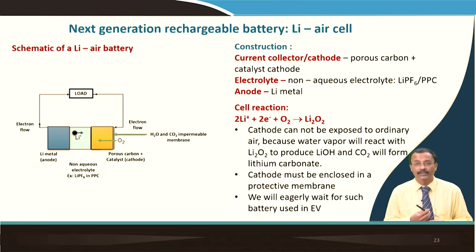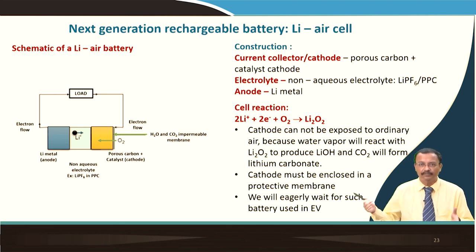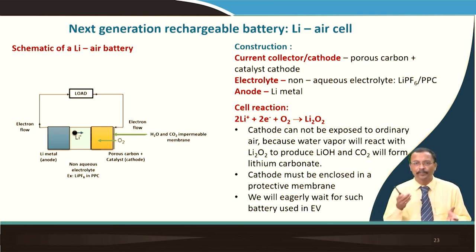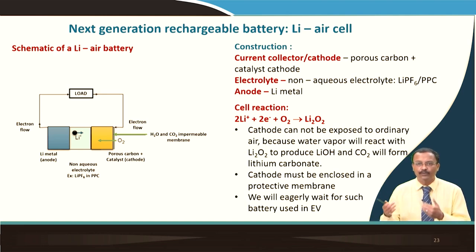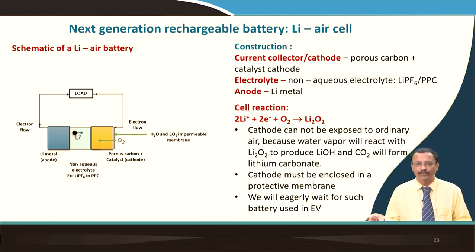Finally, we talk about the next-generation rechargeable battery: lithium-air. It is a very simple battery. The current collector and cathode is porous carbon with some catalyst. The electrolyte is a non-aqueous solution — LiPF₆ in polypropylene, the same as the lithium ion battery — and the anode is lithium metal. The cell reaction is: lithium plus electrons plus oxygen forms Li₂O and Li₂O₂, which then dissociates.